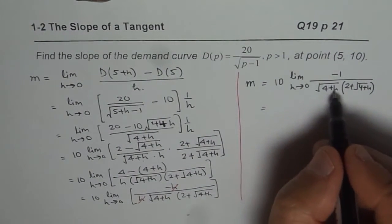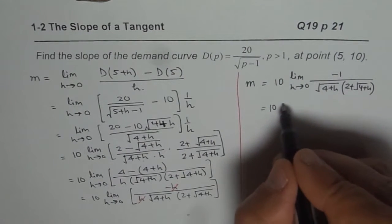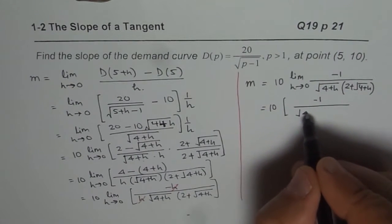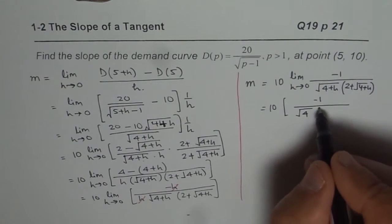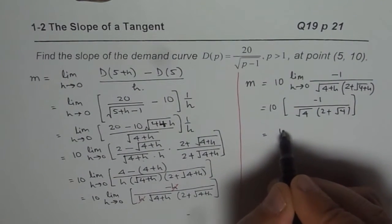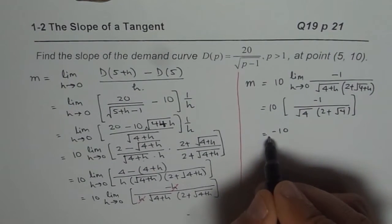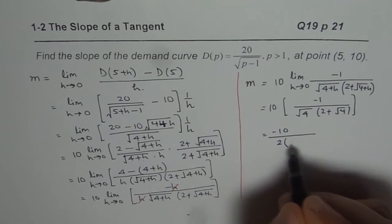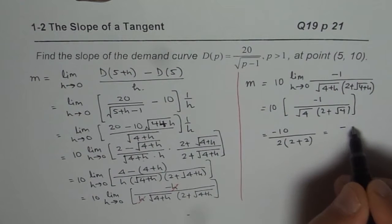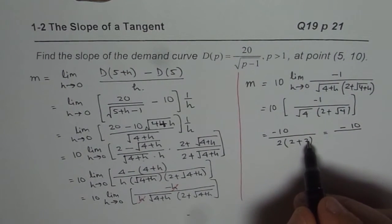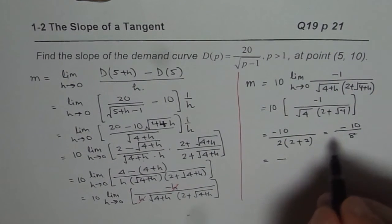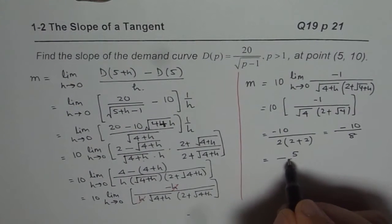Now, we can substitute H equals 0 here. So we get 10 times minus 1 over square root of 4 since H is 0, times 2 plus square root of 4. That gives us 10 with a negative sign divided by square root of 4 is 2. 2 plus square root of 4 is also 2. So we get minus 10 over 2 plus 2 is 4. 4 times 2 is 8. Now, this could be simplified. Dividing both by 2, we get minus 5 over 4.